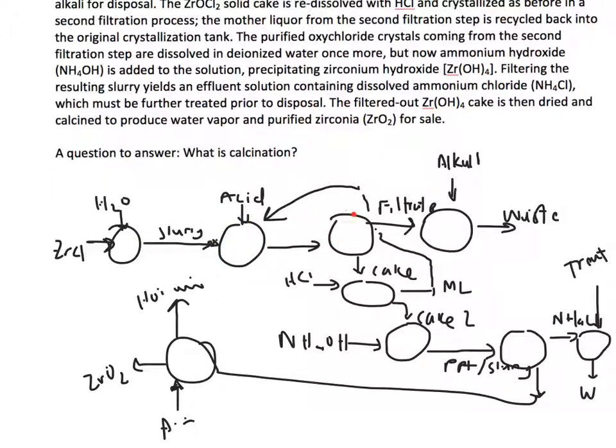That filtration has a second filtration where there's a recycle stream coming back, and then we have the filtrate being treated and sent to waste. From here the cake is treated for another slurry which is then dried and calcined in one step for the product that we're interested in. Here is my version of the layout.